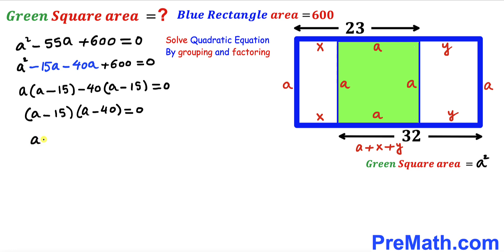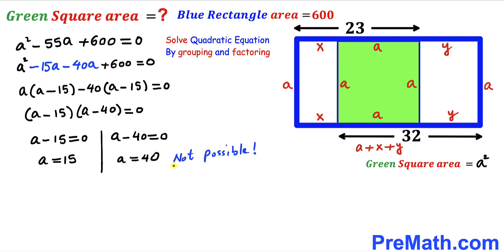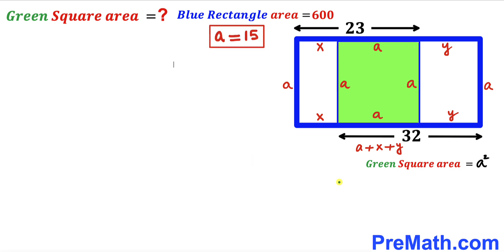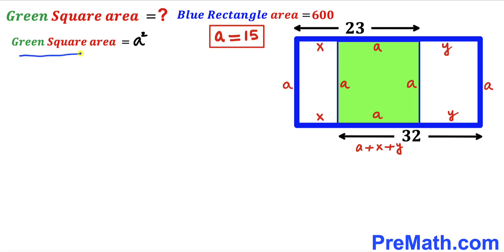Setting each factor to zero gives a − 15 = 0 or a − 40 = 0, so a = 15 or a = 40. The value a = 40 is not feasible since the whole horizontal length is only 23 units, meaning a must be less than 23. Therefore we reject a = 40 and accept a = 15 units.